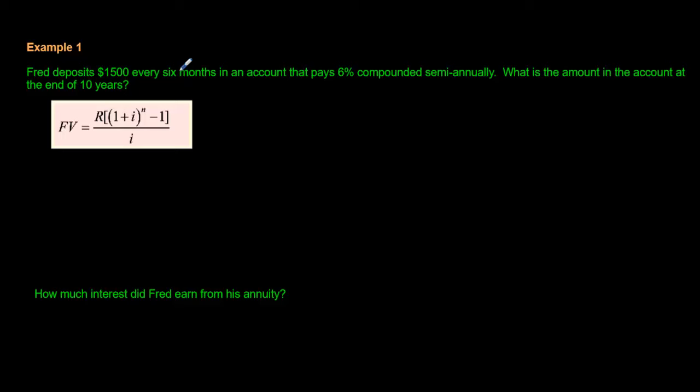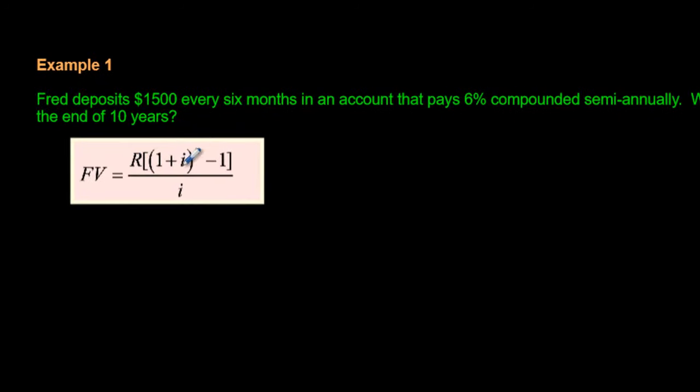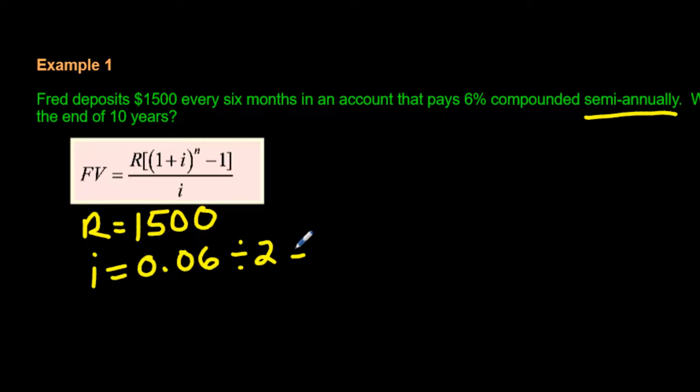It says Fred deposits fifteen hundred dollars every six months in an account that pays six percent, it should say per annum or per year, but it doesn't, compounded semi-annually. What's the amount in the account at the end of 10 years? So we're going to use a calculator to do that, but before we do that, we should first figure out what R, what i, and what n are. So let's start with R. R is the easy one. Well, R is the regular payment being made, or the regular deposit. It's fifteen hundred dollars. The i, it's not so bad, it's just the percent. So 0.06, I'm changing it into a decimal. And we're dividing by the word. What is the word? The word is semi-annually, which is twice a year. That means i is equal to 0.03.